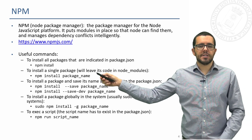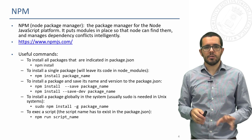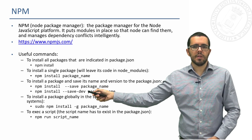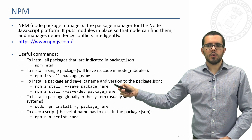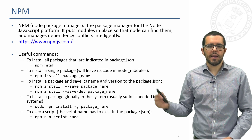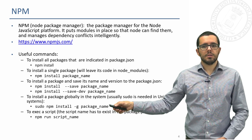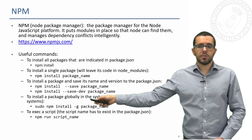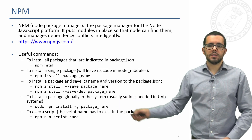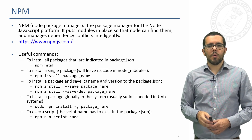NPM install and a package name will install that package but it won't save it into the package.json. To save it you need to add --save or --save-dev along with the package name. This will install the package and also add it to the package.json file. If we need privileges we can use sudo npm install -g to install something globally into the system. If we install something this way we will have a command available anywhere on our machine.